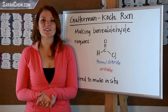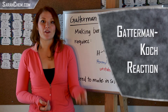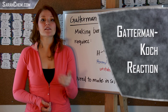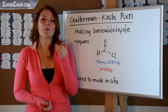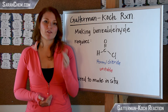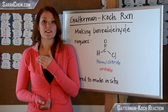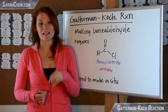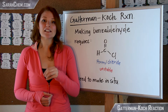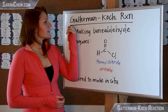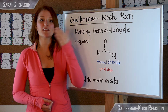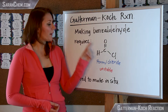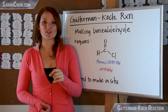In this video I'd like to take a look at the Gatterman-Koch reaction, which is essentially a reaction that allows us to create benzaldehyde. Benzaldehyde cannot be made using the Friedel-Crafts acylation step because the group that you'd need — formyl chloride — is very unstable and has to be made in situ. The Gatterman-Koch reaction provides a mechanism to make benzaldehyde by creating this unstable product in situ.